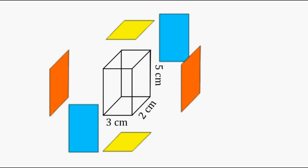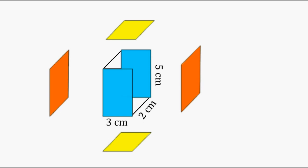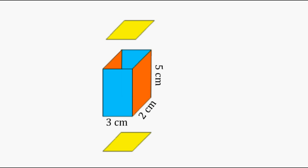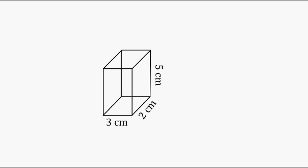A rectangular prism is composed of six rectangles. We can take our three-dimensional rectangular prism and unfold it into a two-dimensional form to see that it is really composed of six different rectangles. So if we can just find the area of each one of those rectangles and then add them together, we can find the surface area of this object.